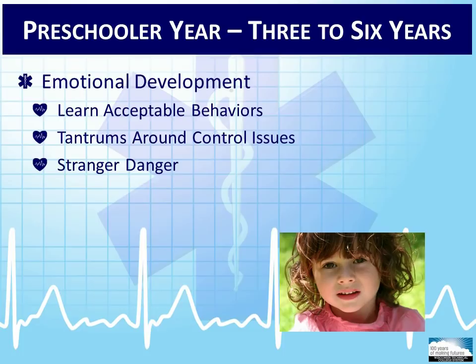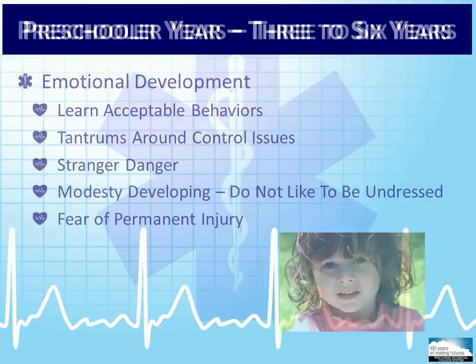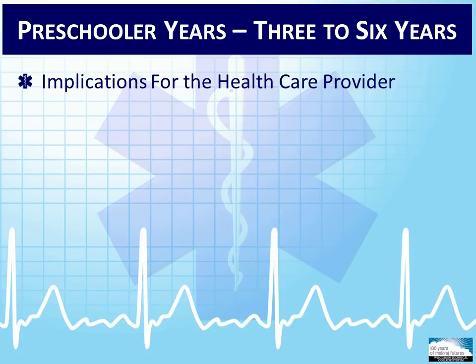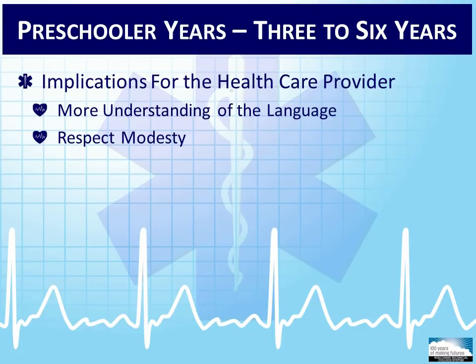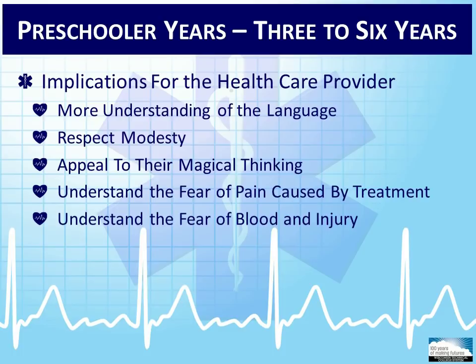Emotionally, this age group learns acceptable and unacceptable behaviors, and preschool children tend to have tantrums when they do not get what they want. The fear of stranger danger is developing, and modesty starts to show given the dislike of being undressed. This age range is more trusting and friendly to strangers than toddlers, but they still have anxiety with stranger danger. The EMT should be able to elicit more information regarding the illness or injury due to the increased language capability. Respect their modesty when performing the exam. If possible, begin the exam with the chest and abdomen, then proceed to the head and extremities. Appeal to the child's magical thinking — for example, telling a child that the magic smoke from the nebulizer will help him or her feel better.